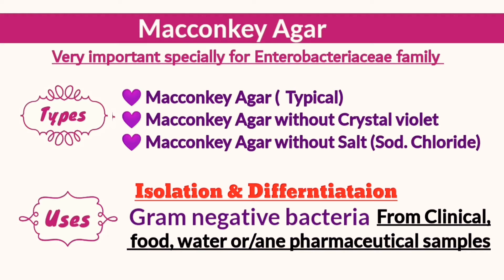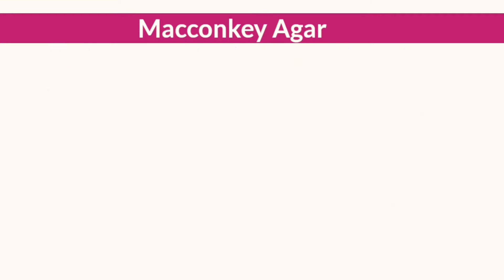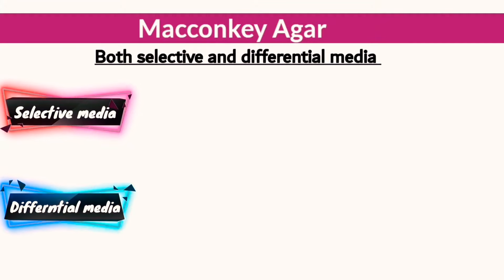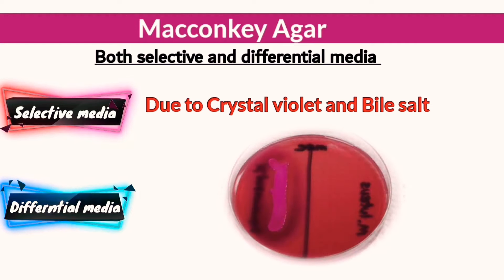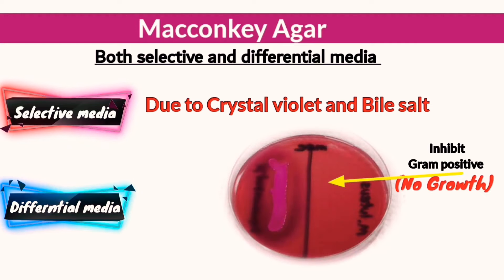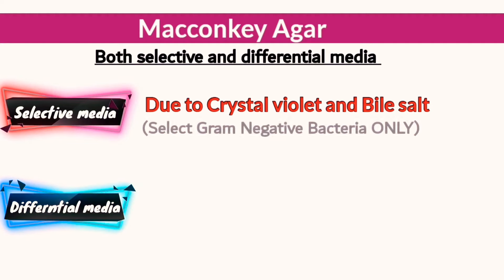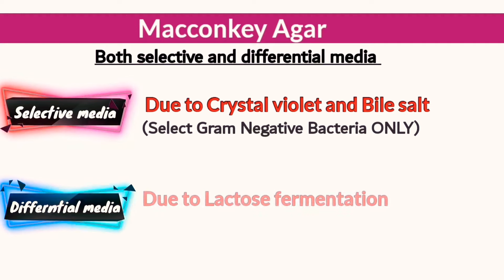MacConkey agar is used with clinical, food, water, or pharmaceutical samples. It is both a selective and differential media. It is selective because it contains crystal violet and bile salts, which inhibit gram-positive bacteria and allow only the growth of gram-negative bacteria. So any microorganism that grows on MacConkey agar will be gram-negative.